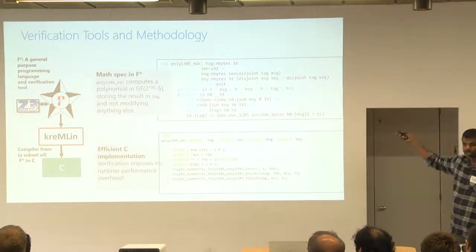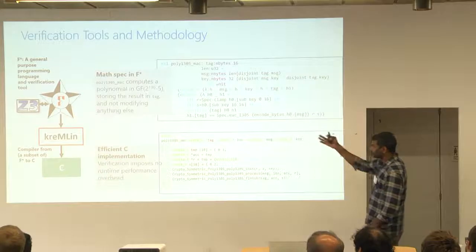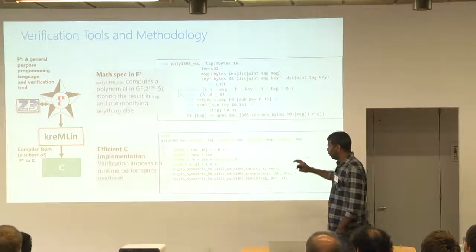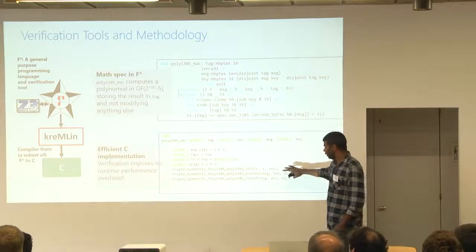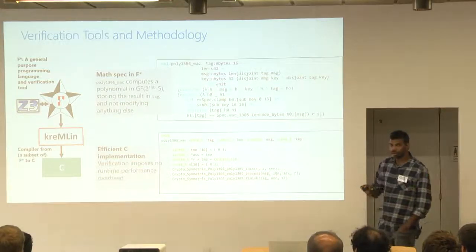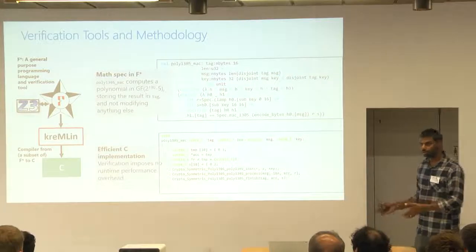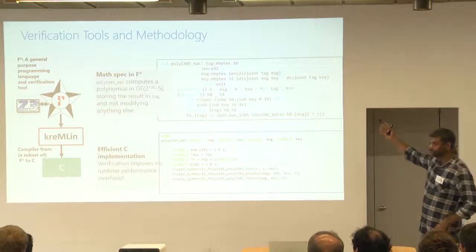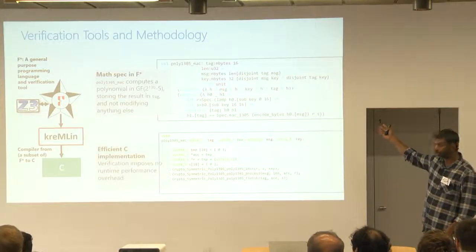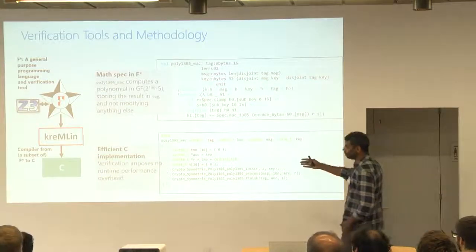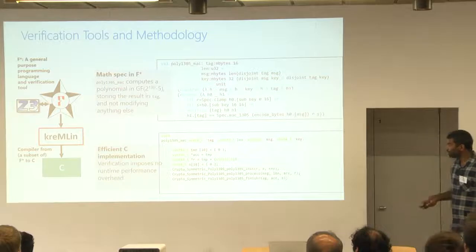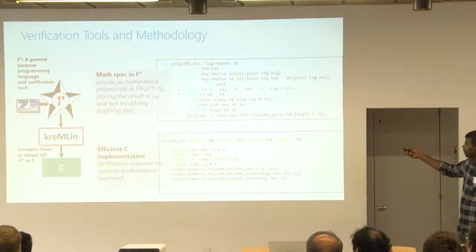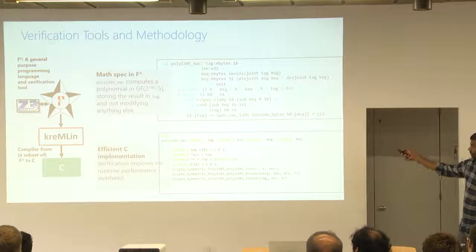Given the spec and an implementation of the spec in F-star, we can compile that spec, that implementation to an implementation in C, that is idiomatic C, where there are no additional dynamic checks. The code has been statically proven to implement this to satisfy its spec. So you get efficient code with no runtime overhead. So that's our general methodology. This is at the scale of just one crypto primitive.